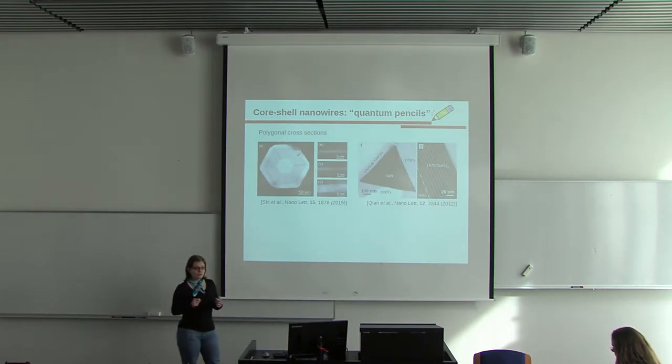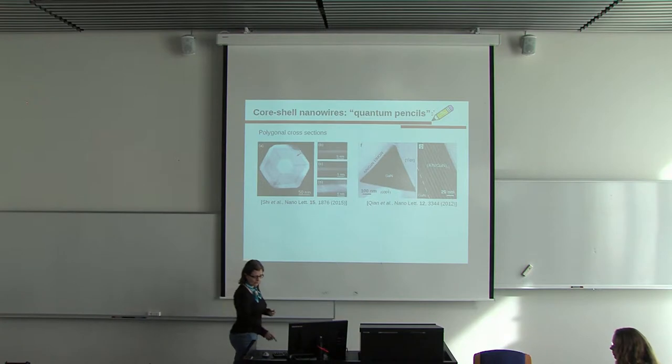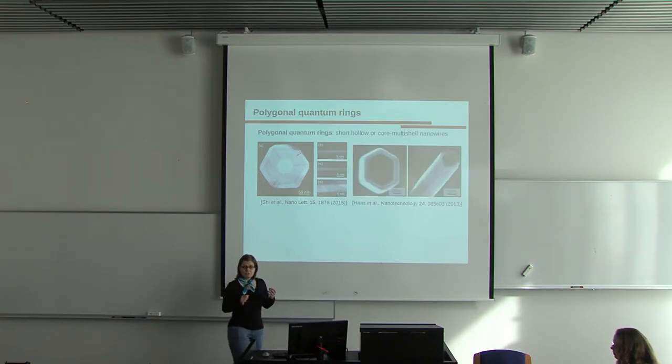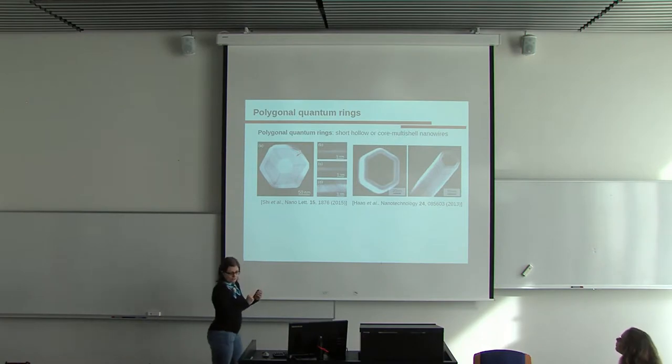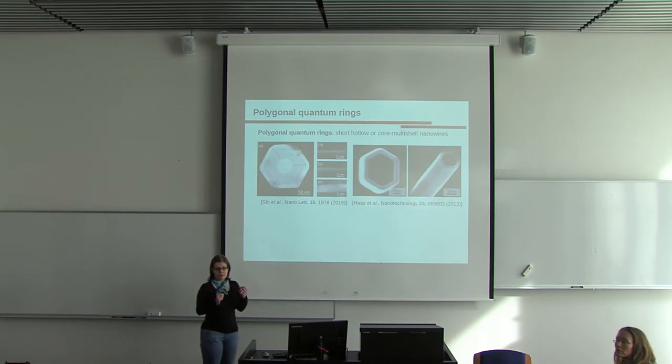Those nanowires usually have polygonal cross sections, most commonly hexagonal, but triangular nanowires have already been achieved. It is possible to adjust the materials in such a way that all electrons are confined only in one of the shells. It is also possible to etch the central core part and achieve nanotubes of finite thickness.